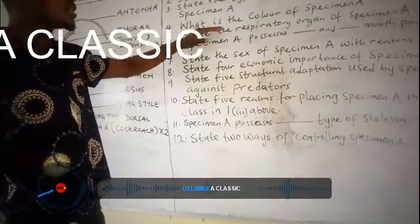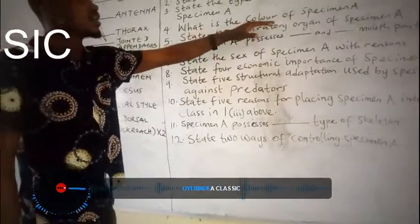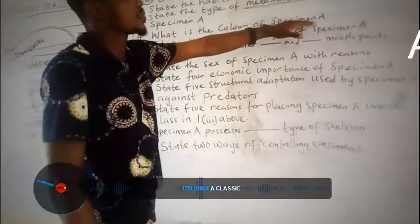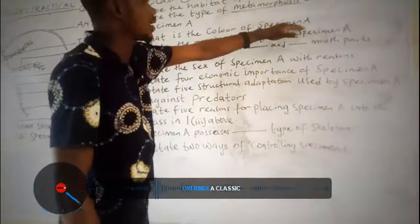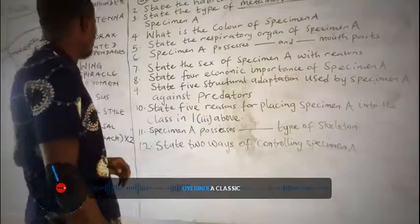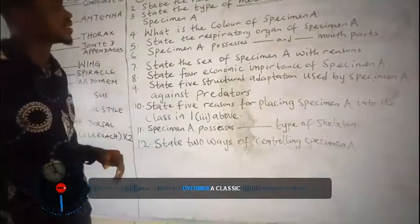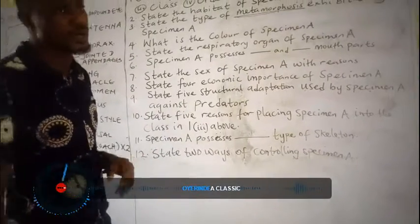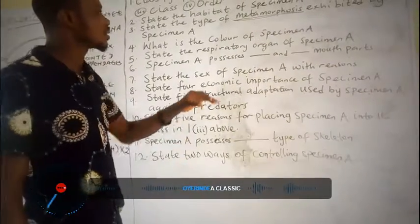What is the color of specimen A? Specimen A is dark brown in color.